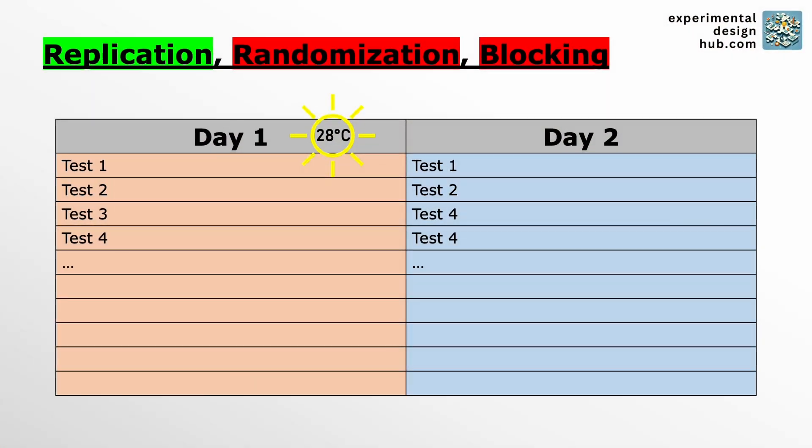So Louise realizes that reaction time could be an issue and she decides to repeat each test 10 times to get an average braking distance for each tire. Now that sounds like a much better idea, but there's another problem.